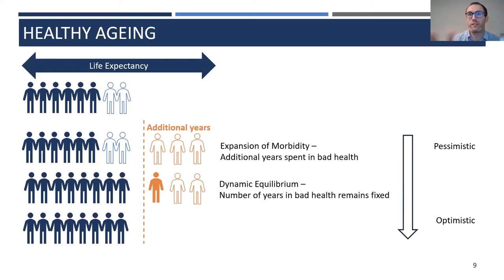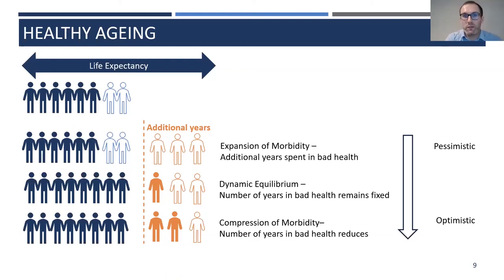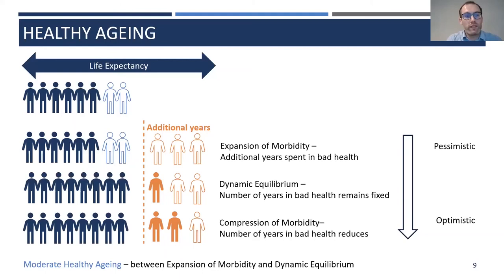The most optimistic assumption is the compression of morbidity assumption, which assumes that as life expectancy increases, the number of years of bad health is compressed down to older and older ages. In our modeling and scenarios we also introduce one additional effect: a moderate healthy aging effect. This has no single theoretical basis, but we introduce it to add more nuance into our projections. It lies between our pessimistic expansion of morbidity and our more optimistic dynamic equilibrium assumptions.